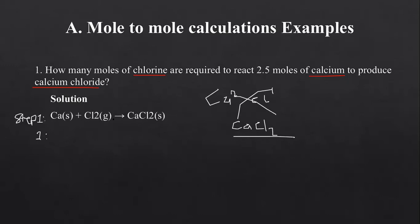Step 2: express the equation in terms of mole ratios. We say the number of moles of calcium over 1 — where 1 is the invisible coefficient in front — should be equal to the number of moles of Cl2 over 1, because there is also an invisible coefficient of 1 in front. This should also equal the number of moles of CaCl2 over 1.